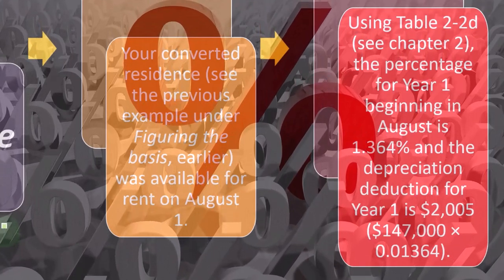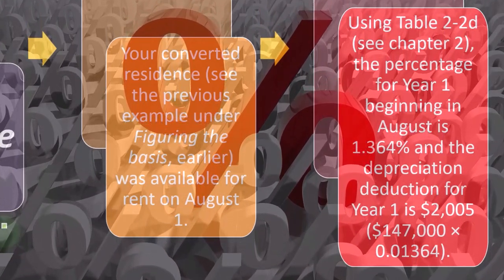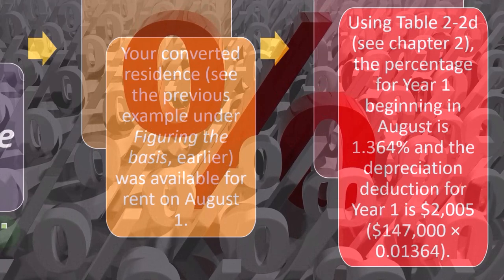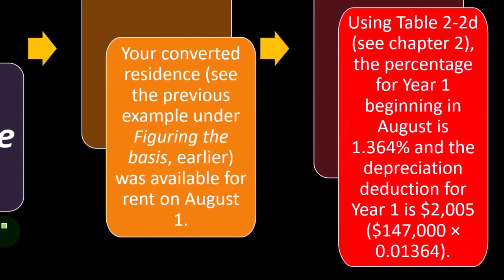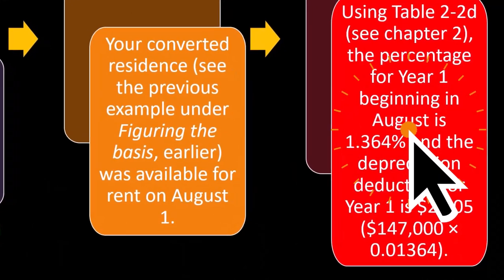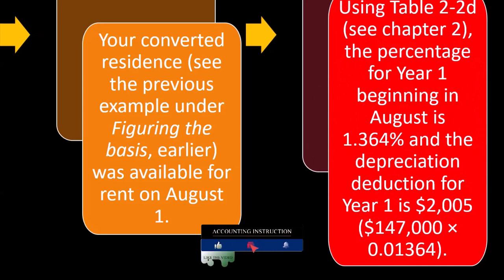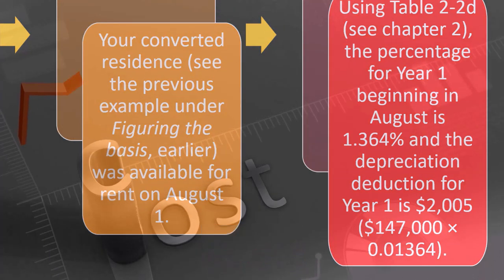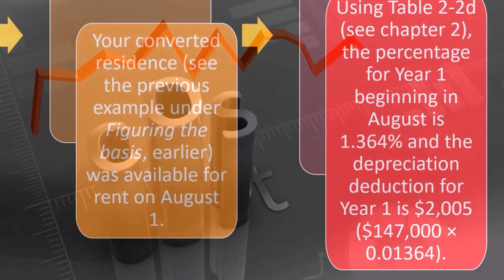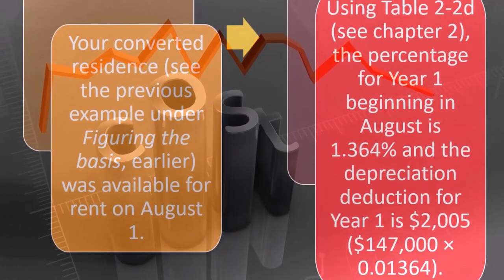Once we've determined the adjusted basis to put the property on the books at, and the date to put the converted property on the books, it's pretty straightforward — we're doing the same kind of thing we'd do as though we bought the property. The difference between purchasing the property and converting the property is that when you purchase it, you generally know when you bought it and placed it in service, and you know what the cost is because you just paid for it. When you're converting the property, you've got this basis situation to deal with because you bought it, inherited it, or acquired it in some other way.